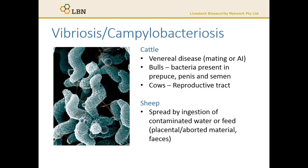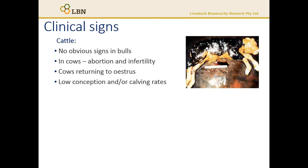An abortion onto moist ground around a watering point or soak area may rapidly spread disease to the rest of the sheep flock. The increased length of survival of Campylobacteria in cool, moist conditions explains why winter and spring lambing flocks are most at risk.